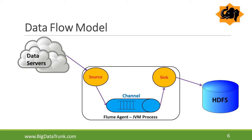In Flume, flow starts from the client — here, the data server acts as the client. When the client transmits events to the source, the source receives these events and then delivers them to the channels. From the channel, events are consumed by the sink and finally written to HDFS.